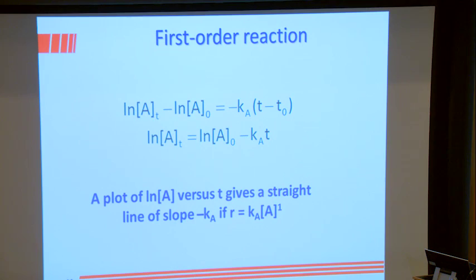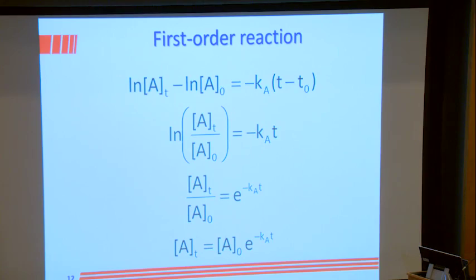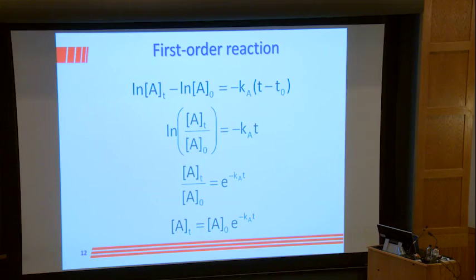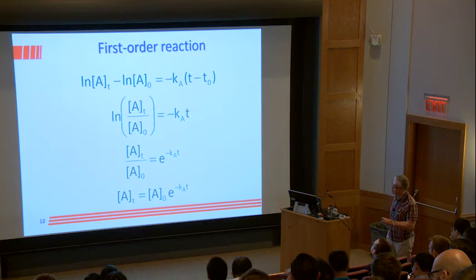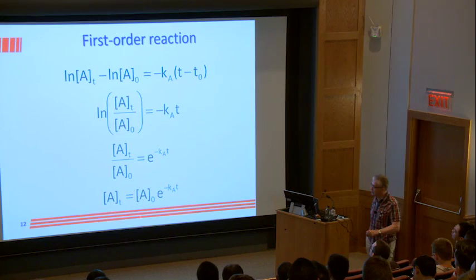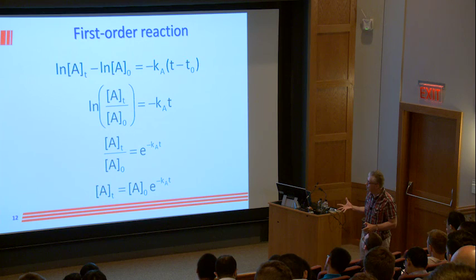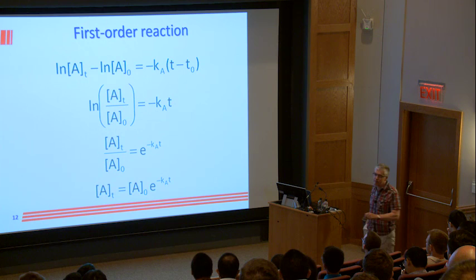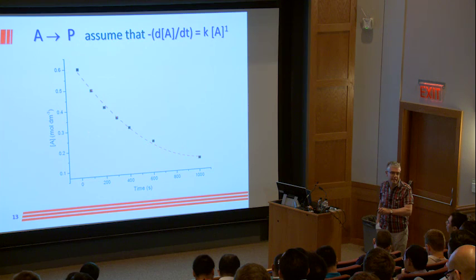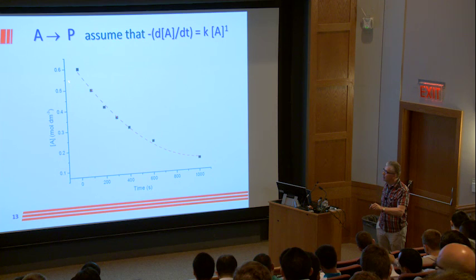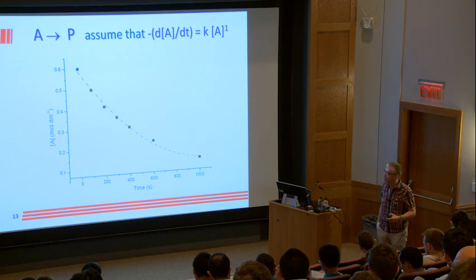For a first order reaction, the half-life — the time for [A] to reach half its original value — gives: log(½[A]₀/[A]₀) = −k·t_(1/2), so log(½) = −k·t_(1/2), and t_(1/2) = 0.693/k, or k = 0.693/t_(1/2). Plotting log[A] versus time gives a straight line with slope equal to minus the rate constant.